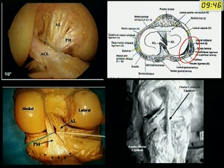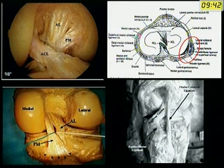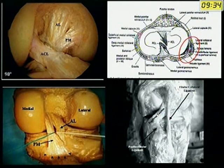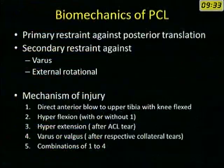The posterolateral corner consists of many structures which are difficult to understand, but from a surgical point of view, the surgeon needs to address only three structures: the fibular collateral ligament, the popliteus tendon, and the popliteofibular ligament.